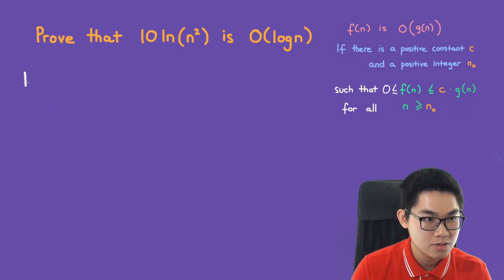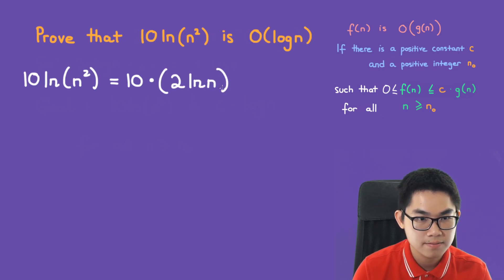Using the log rules, we know that 10 times ln of n squared, we can bring the two out here. So we have 10 times 2 ln of n. So this would give us 20 ln of n.